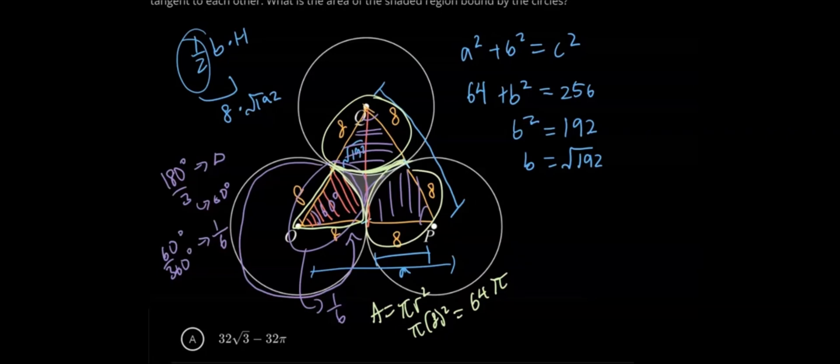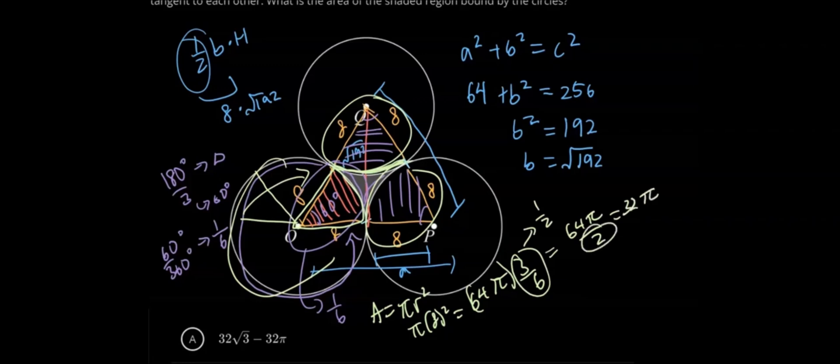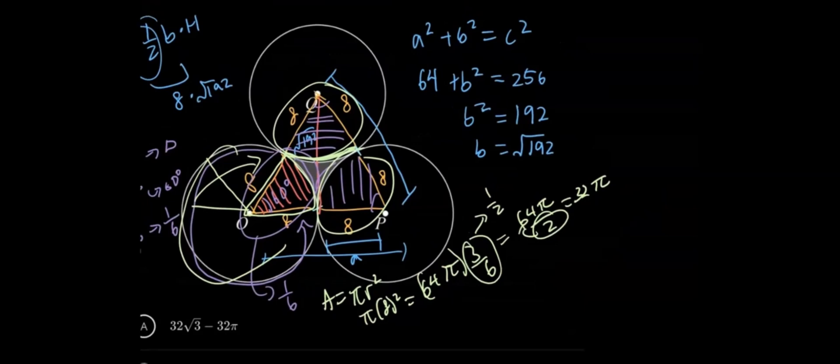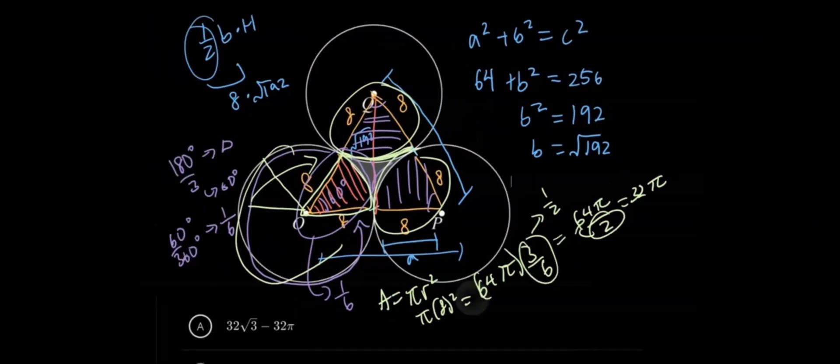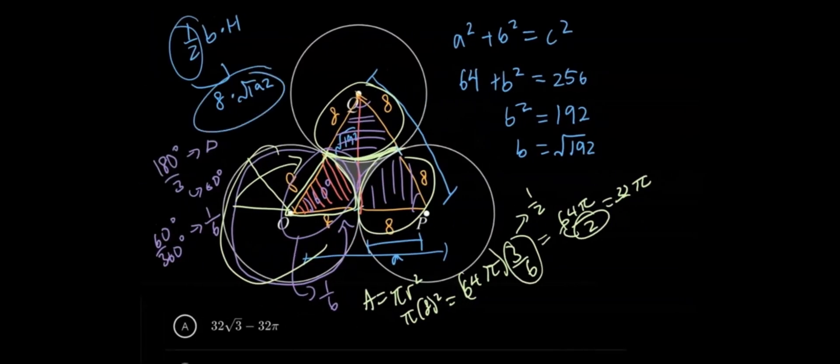So we multiply by three and divide by six because this is one-sixth, but there's three of them. If we took all these together, that would just be half of a circle. So this equals 64 pi over 2, because three-sixths equals one over two. This equals 32 pi. So the area of all this black space is 32 pi. If we subtract that from our original triangle, we should have our answer. The original triangle was 8 times square root of 192.